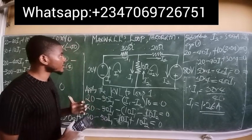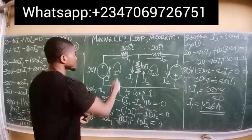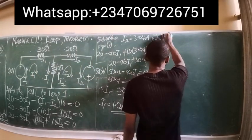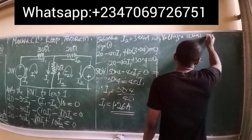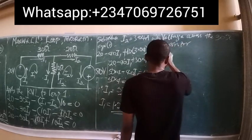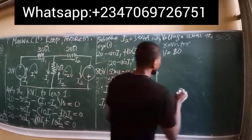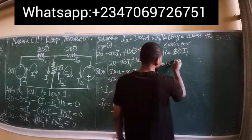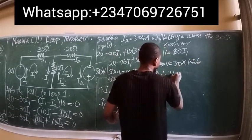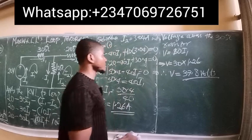The second part of the question asks us to find the voltage across the 30 ohm resistor. We know the current through the 30 ohm resistor is I1. So voltage equals 30 times I1, which is 30 multiplied by 1.26, giving a voltage of 37.8 volts across the 30 ohm resistor.